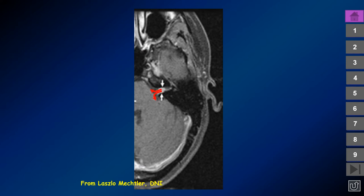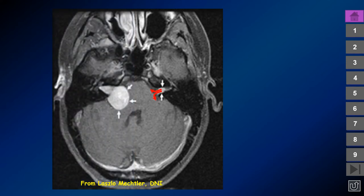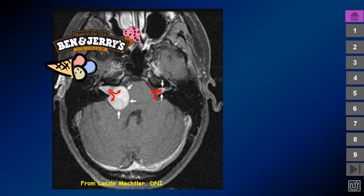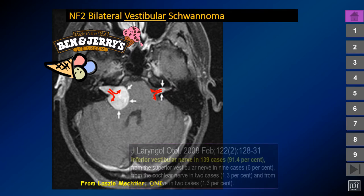The schwannoma begins as an intracanalicular mass and can rapidly grow out of the IAC into the cerebellopontine angle cistern, creating the appearance that the tumor is arising in the cistern. The portion inside the IAC causes a cone-shaped or flared enlargement of the IAC lumen, and there is no CSF within the IAC. This shape looks like an ice cream cone — always look for the intracanalicular portion of the schwannoma, as that confirms it is truly arising in the IAC.